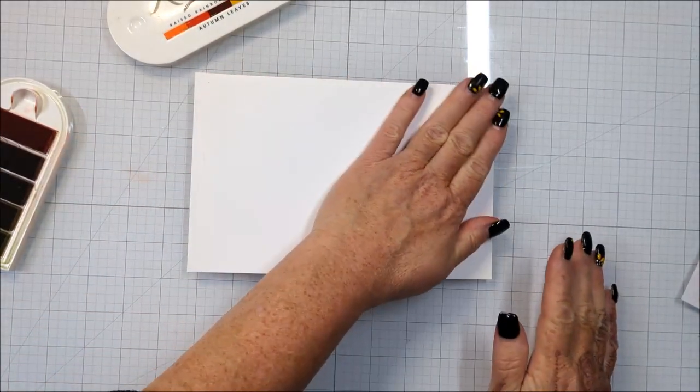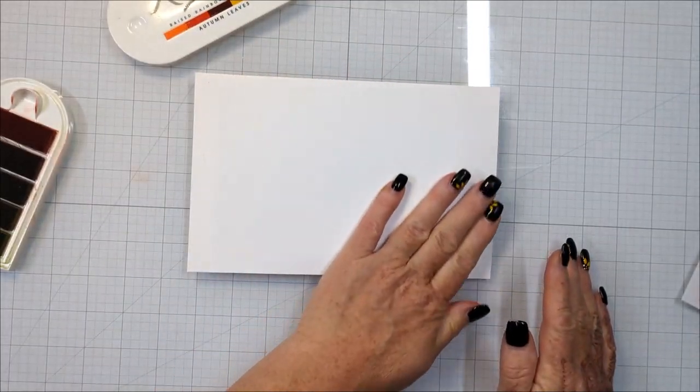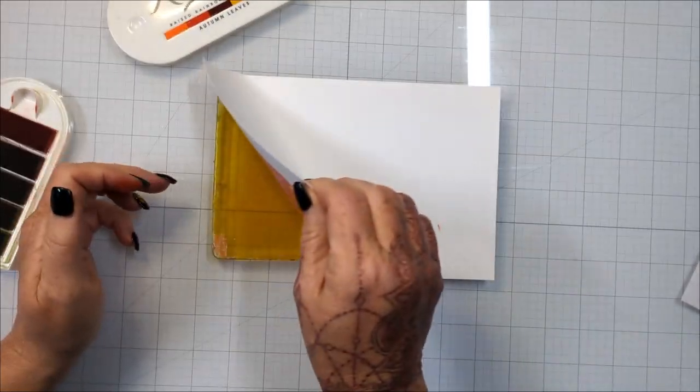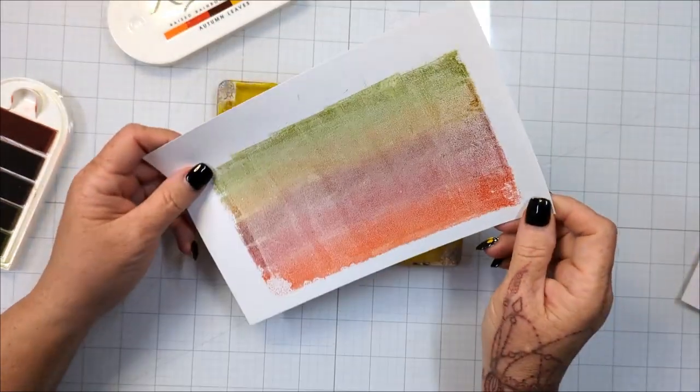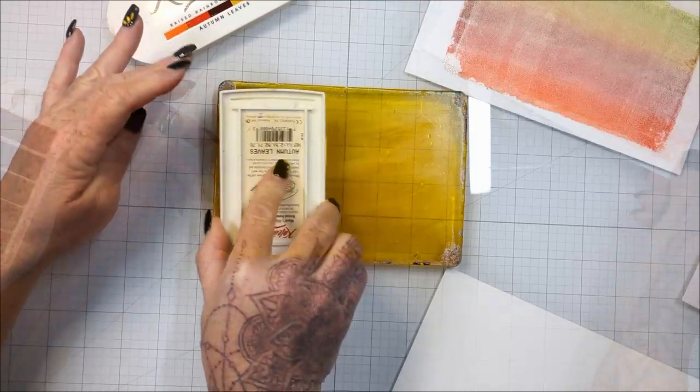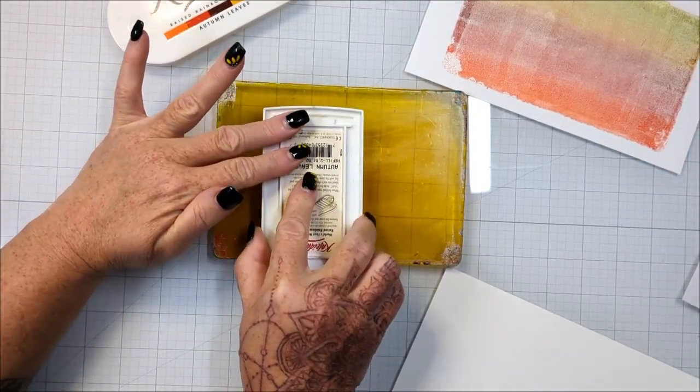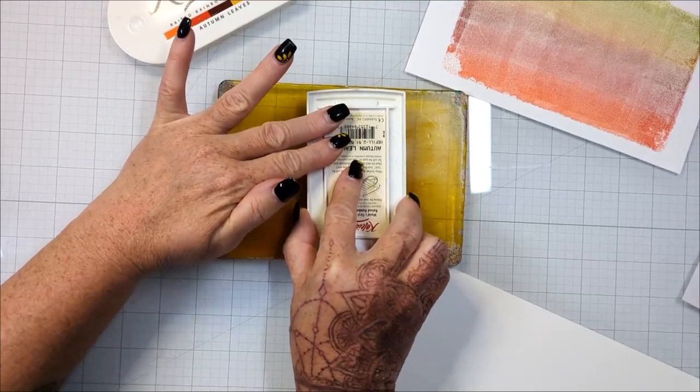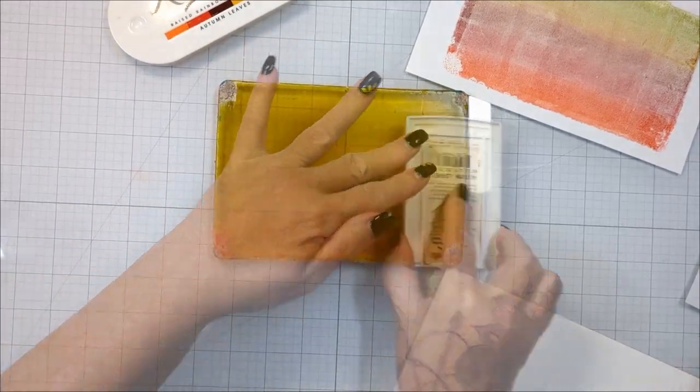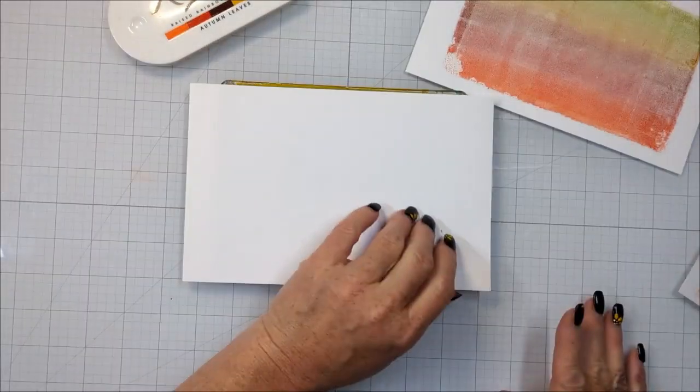I'm using the Autumn Leaves. I also have the Spectrum. There are pretty much any color combo that you can think of. But if there's a color combo that is not available, you can make your own. There are uninked Kaleidicolor ink pads and you can create your own color palette using re-inkers. It's absolutely amazing.